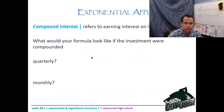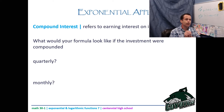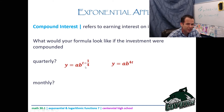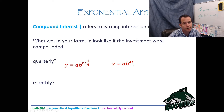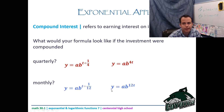Compounding quarterly means the period is 1/4 of a year, so t ÷ (1/4) = 4t. Compounding monthly means the period is 1/12 of a year — there are 12 months in a year — so t ÷ (1/12) = 12t.